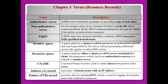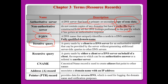DNS has many kinds of terms. An authoritative server means a DNS server hosting primary and secondary servers with a copy of exact zone data. A non-authoritative server does not contain copies of any domain but only has a cache file, constructed from all DNS lookups performed in the past. FQDN means the fully qualified domain name — for example, www.microsoft.com. Iterative queries are made by the client to a DNS server for an authoritative answer from authoritative servers, without generating additional server-side queries to other DNS servers.